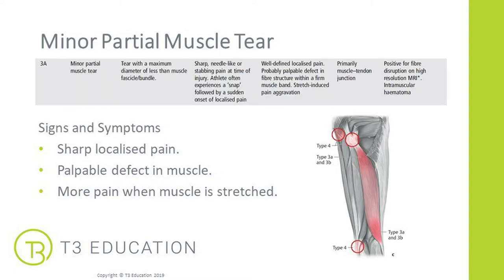Looking at the minor partial muscle tear: the signs and symptoms you may see in clinic include sharp, localised pain. You may be able to feel a defect in the muscle — a dip where the tear has occurred. When the client stretches the muscle there is more pain in that area, and injury assessments would create a positive test for a muscular injury.